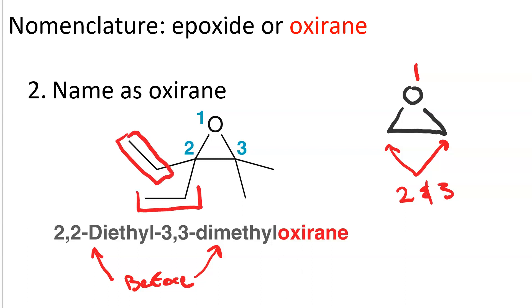So two ethyl groups, two methyl groups, and it becomes 2,2-diethyl, 3,3-dimethyloxirane.